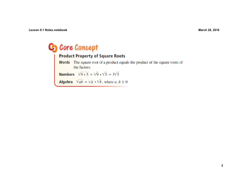The first core concept is the product property of square roots — make sure you have this in your notes. The square root of a product equals the product of the square roots of the factors. In numbers, if you have the square root of 9 times 5 underneath the radical, we can break that up into the square root of 9 times the square root of 5.